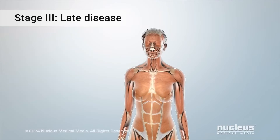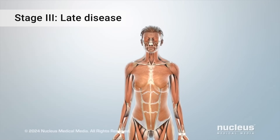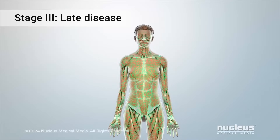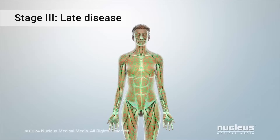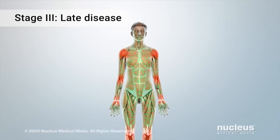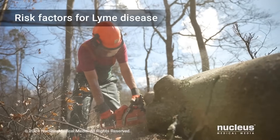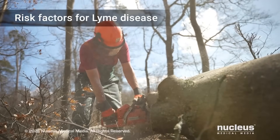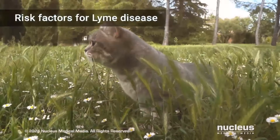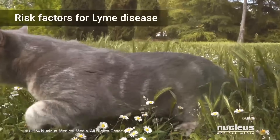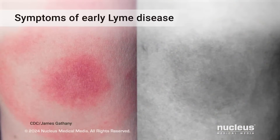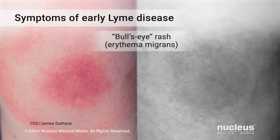If not treated, the disease can progress to the late stage. During this stage, the infection can spread throughout your body. This happens months or years after the bite. Muscle and joint symptoms are common in this stage. The main risk for getting Lyme disease is spending a lot of time outside in places where infected ticks live. Having a pet that may carry infected ticks home from these areas can also increase your risk.